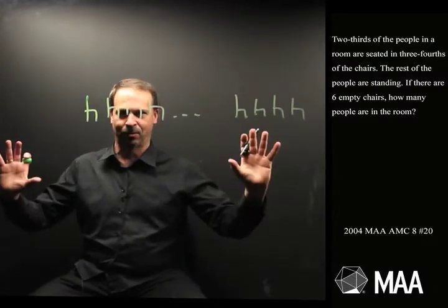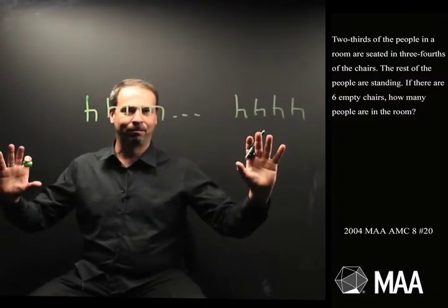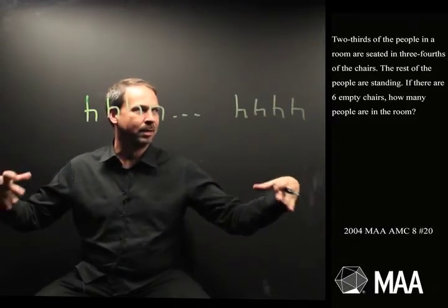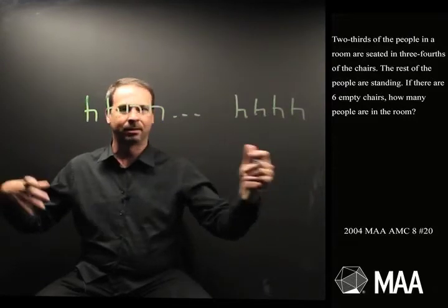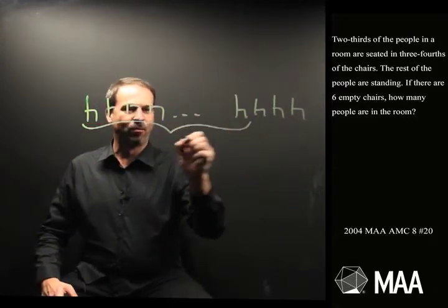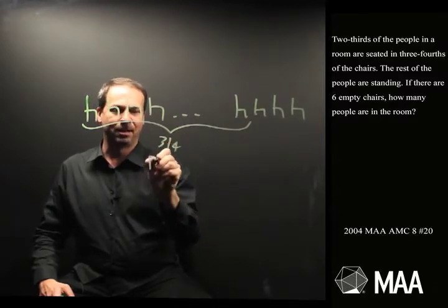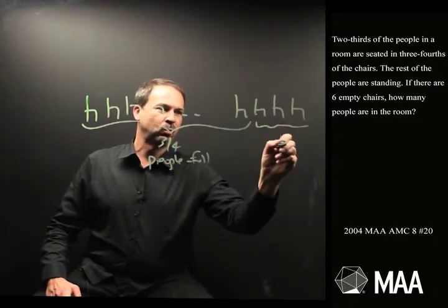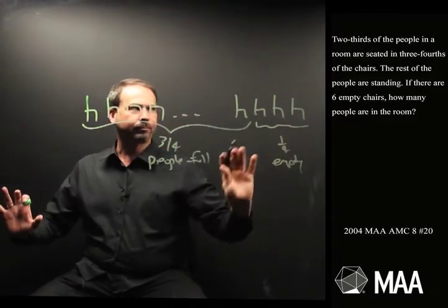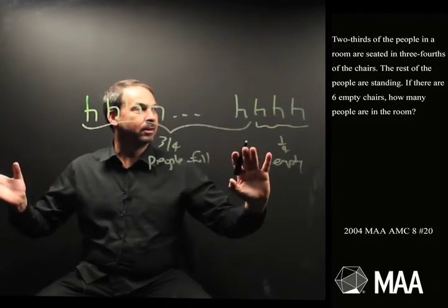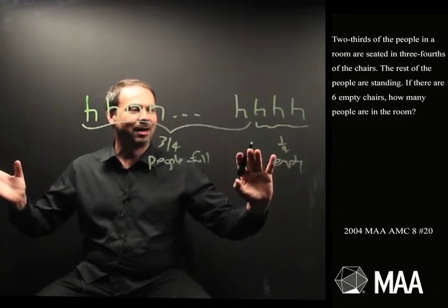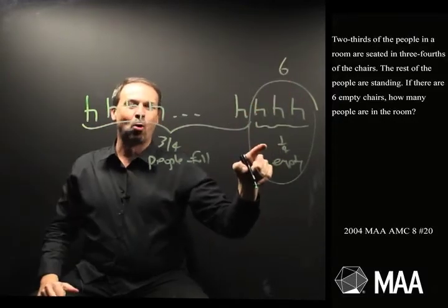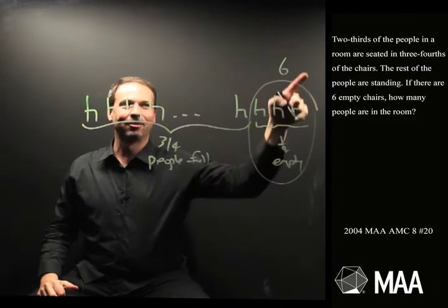So: empty chairs, sitting in chairs, stuff going on. Two-thirds of the people in the room are seated in three-fourths of the chairs. Three-fourths of them have people in them — people full, I'll write 'people full' because it sounds fun. And one-quarter of them are empty then. That makes sense. The rest of the people are standing. If there are six empty chairs — my picture has only three empty chairs, but I know there are six empty chairs. A quarter of the chairs are empty, and there are six empty chairs.